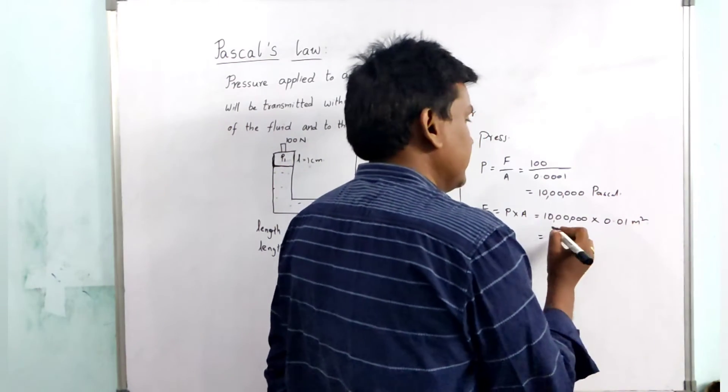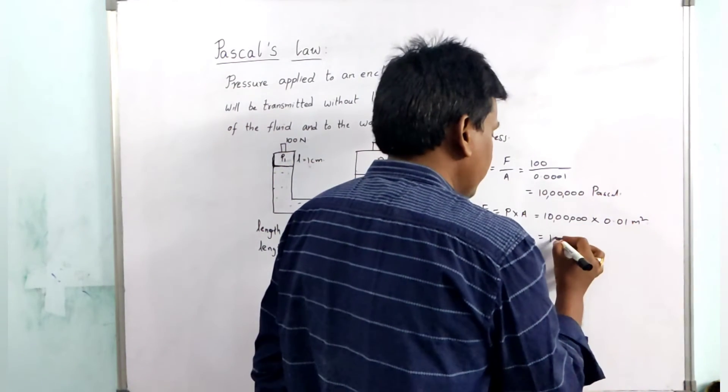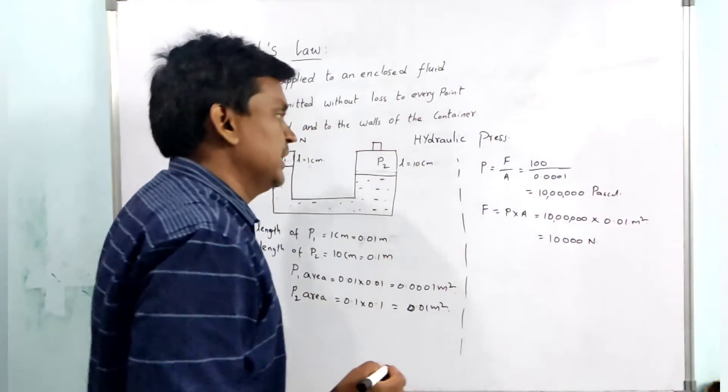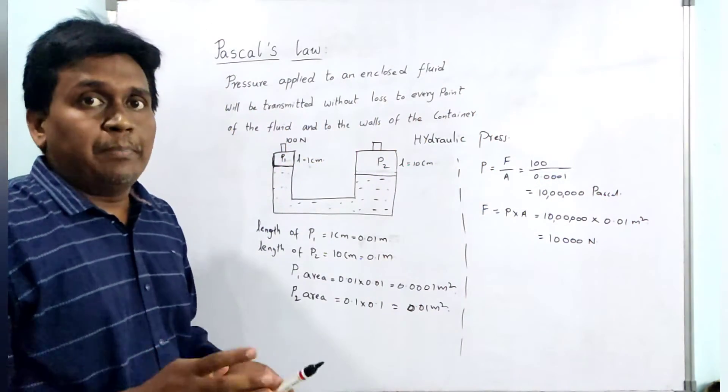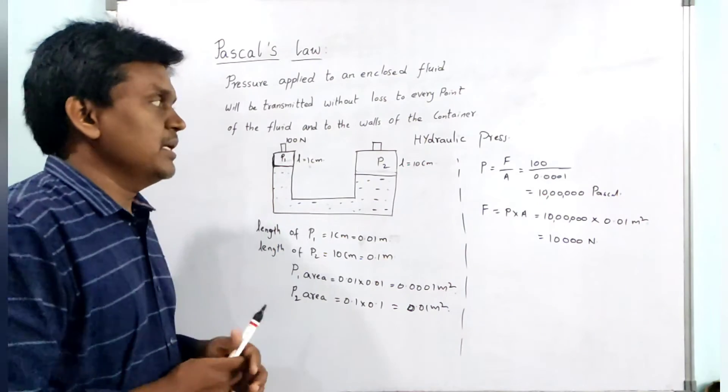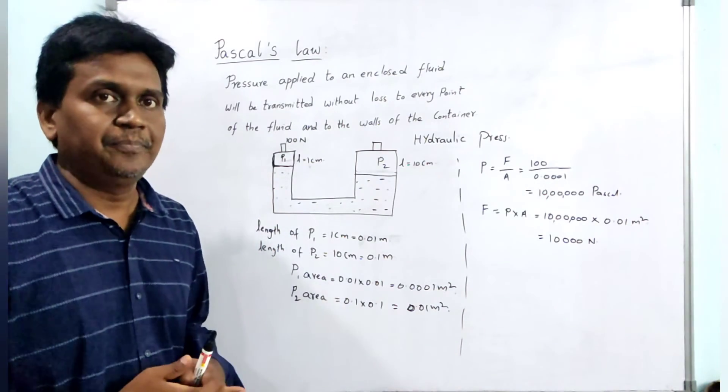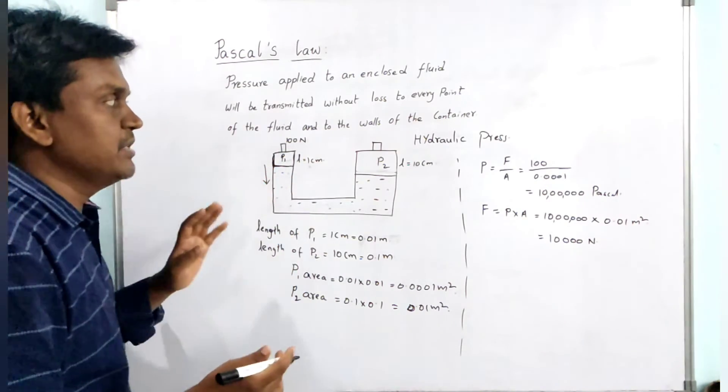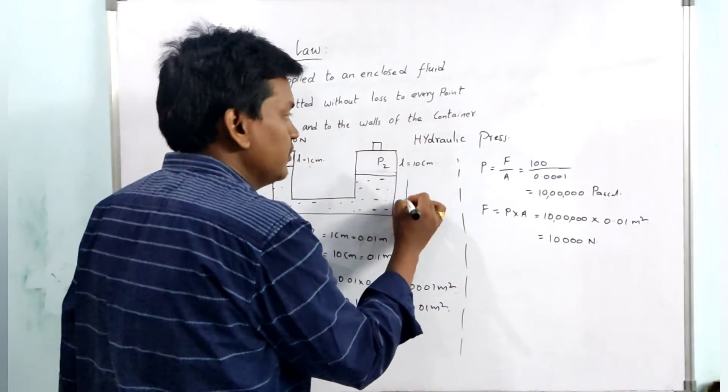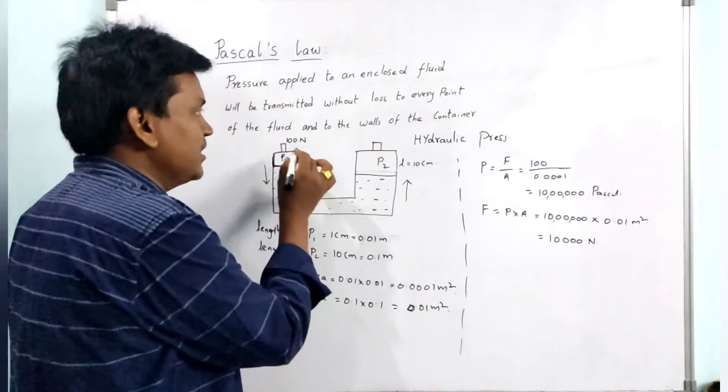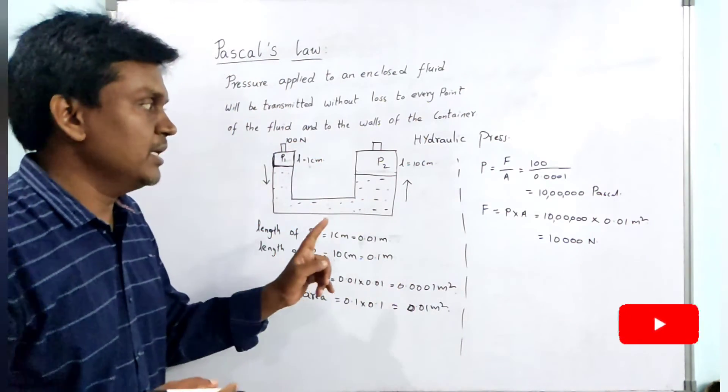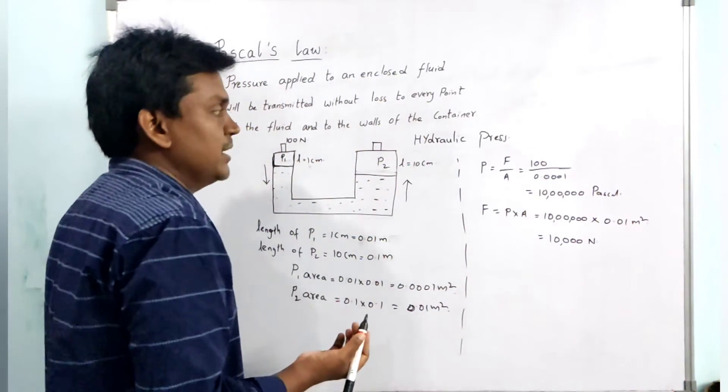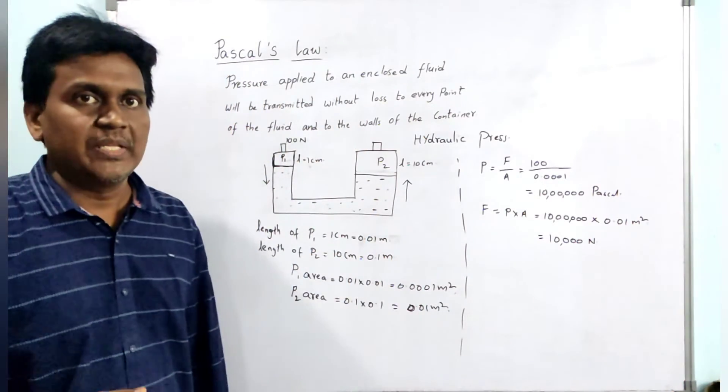By multiplying, we will get the force as 10,000 Newton. If you apply a force of 100 Newton at piston 1 in the downward direction, the force which is acting on piston 2 will be in the upward direction. As we are applying 100 Newton on piston 1, the force acting on piston 2 is 10,000 Newton in upward direction.